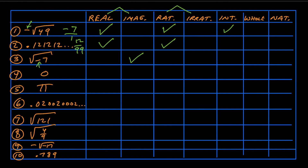For number four, the number zero — remember, zero is the same as zero over one, so you can write it as a ratio of an integer over an integer, making it rational. If it's rational, it's also real. It can't be irrational. Zero is an integer and it is a whole number, but it's not a natural number. Natural numbers are the counting numbers — 1, 2, 3, 4 — so zero is included in whole numbers but not in natural numbers.